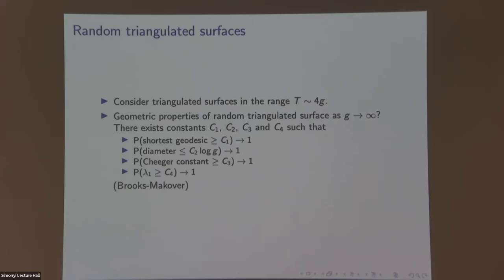You take the hyperbolic metric and ask questions like: what is the expected length of the shortest geodesic, or shortest non-null-homotopic curve; what is the diameter; what is the Cheeger constant, which measures roughly how difficult it is to cut the surface into two pieces of roughly equal area; and what is the first eigenvalue of the Laplacian. They showed that there exist constants such that these quantities behave like specific values with high probability, essentially.